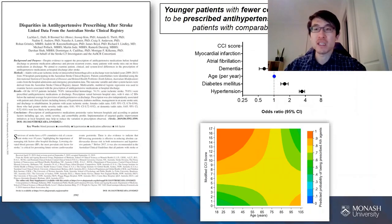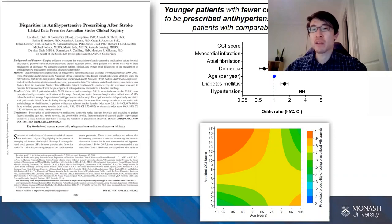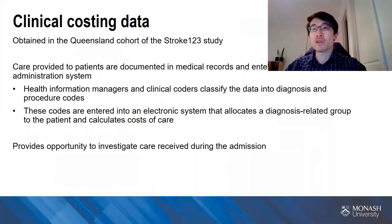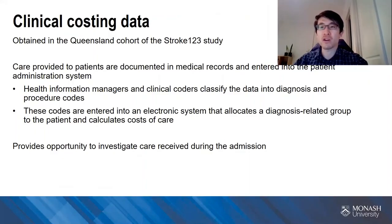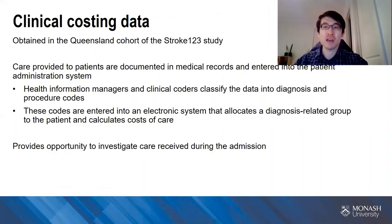Another question we've looked into using the Stroke 123 data set is the prescription of antihypertensive medications. Using these data, we've been able to show that younger patients with fewer comorbidities were likely to be prescribed antihypertensive medications after the stroke, despite there being a general recommendation for prescription after stroke in clinical guidelines at the time these patients were admitted. For the Stroke 123 cohort in one state of Australia, we also obtained clinical costing data. Clinical costing is the process of determining the cost of the resources used by patients during their hospital stay.